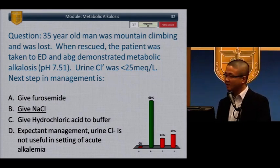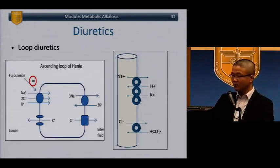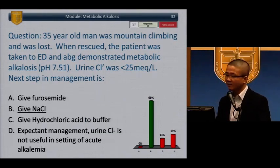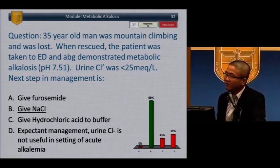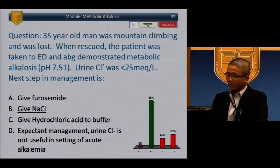Chloride-responsive metabolic alkalosis: the body is trying to hold on to chloride because of volume loss — similar to a loop diuretic kept on diuresing. Urine chloride less than 25 mEq/L suggests the patient is hypovolemic — it's simply contraction alkalosis. So a urine chloride less than 25 mEq/L identifies a chloride-responsive metabolic alkalosis.